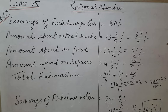Earnings of the rickshaw puller = ₹80. Amount spent on tea and snacks = 13⅗, which we convert to 68/5 rupees. Amount spent on food = 25½, that is 51/2 rupees. Amount spent on repairs = 4⅖, that is 22/5. So his total expenditure is 68/5 + 51/2 + 22/5.